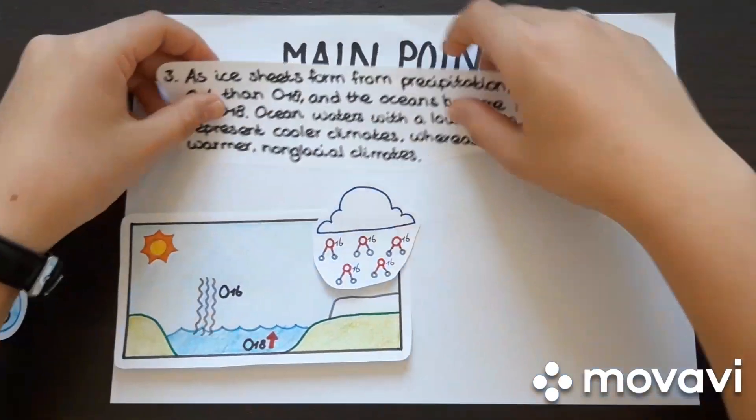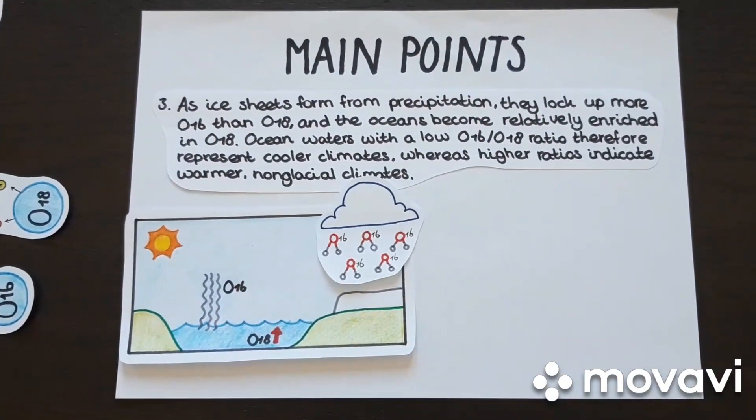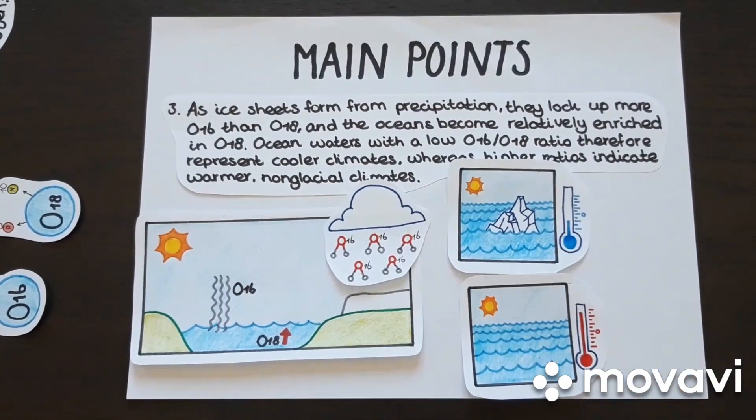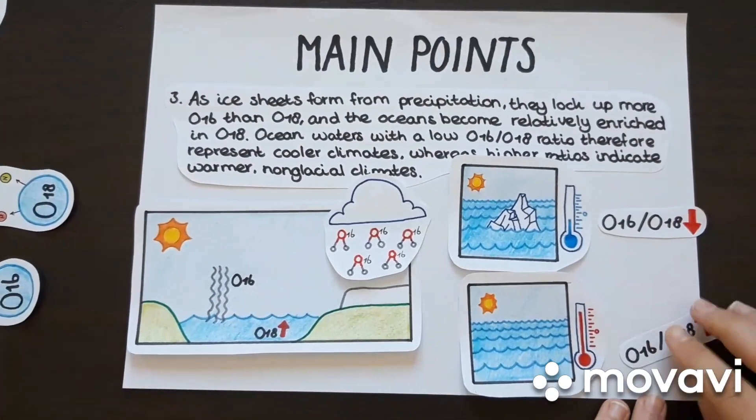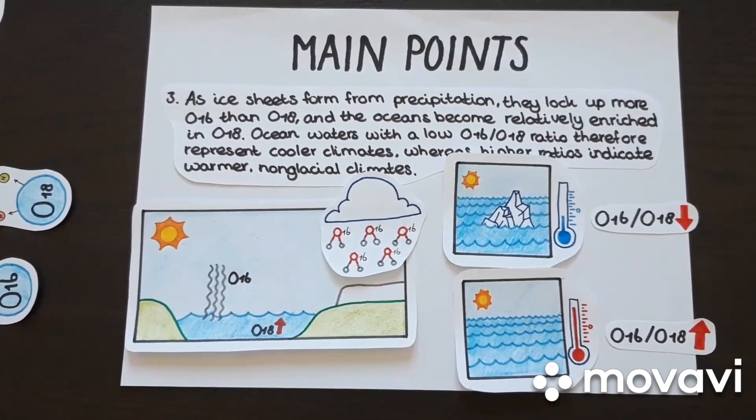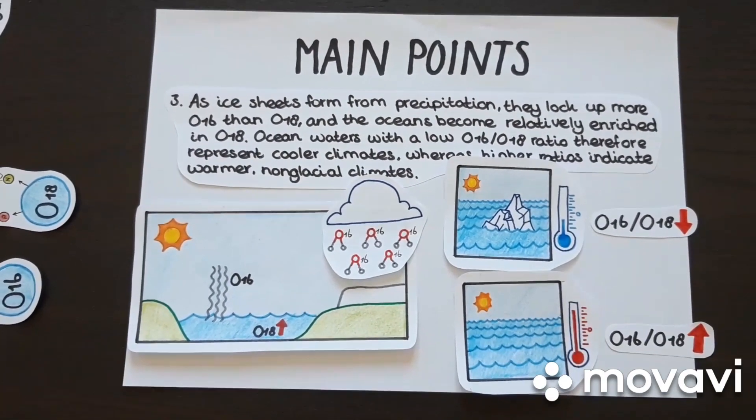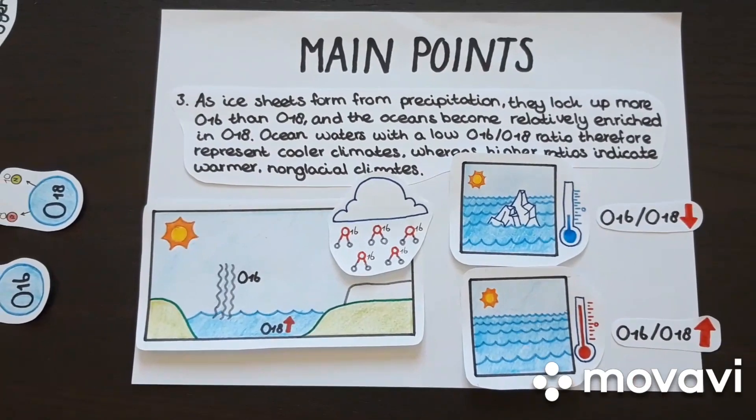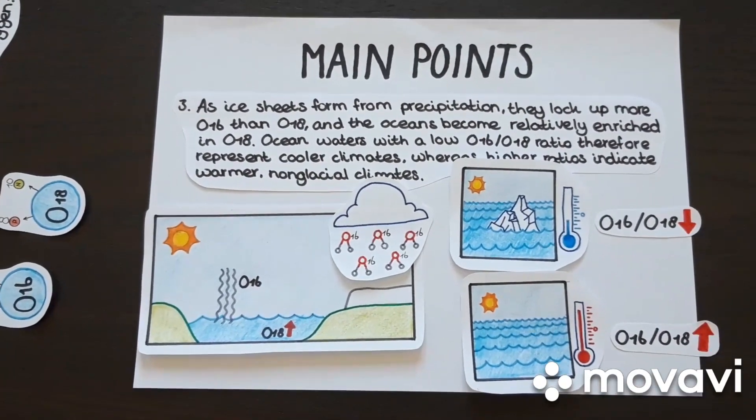3. As ice sheets form from precipitation, they lock up more O16 than O18, and the oceans become relatively enriched in O18. Ocean waters with a low O16-O18 ratio therefore represent cooler climates, whereas higher O16-O18 ratios indicate warmer, non-glacial climates.